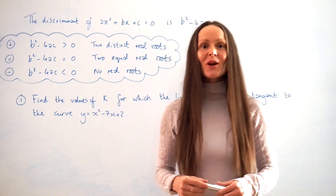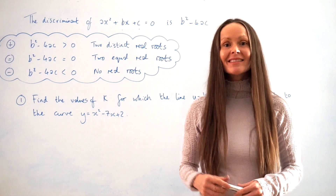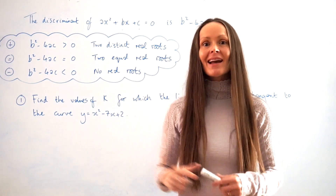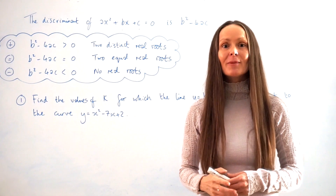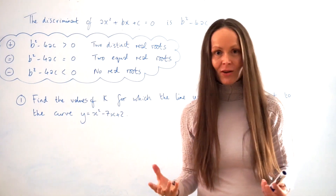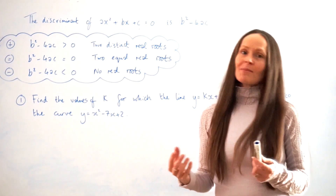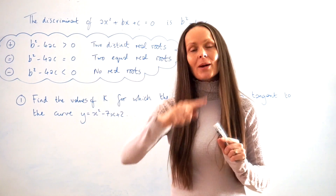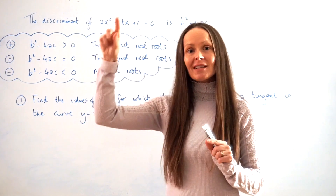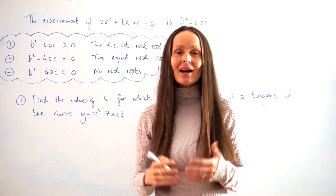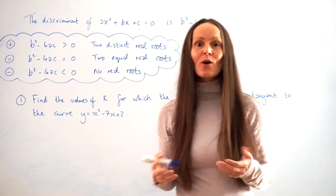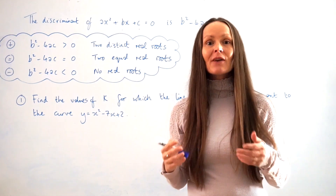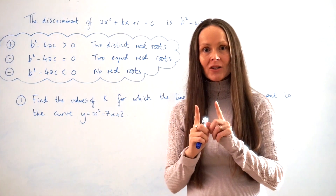In this lesson we're going to look at the intersection of straight lines with quadratic curves, and how the discriminant tells us how many solutions there are going to be. If you have the equation of a straight line and the equation of a quadratic curve, and you need to work out the coordinates of the points of intersection, if there are any, you would have to solve the simultaneous equations.